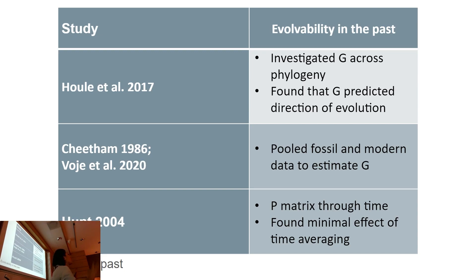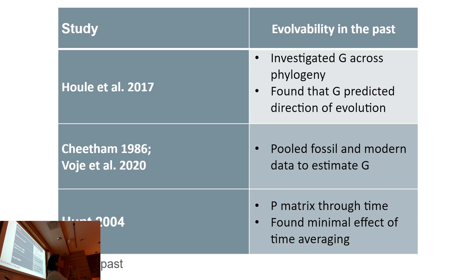It turns out to be within about 1% — so it's not that big a difference in phenotypic variation when you pool fossil data compared to modern samples. What none of these studies have done is looked at how G changes through time through a fossil record, and that's what I'm hoping to do with this dataset.